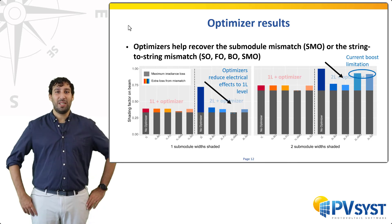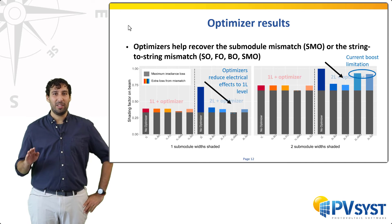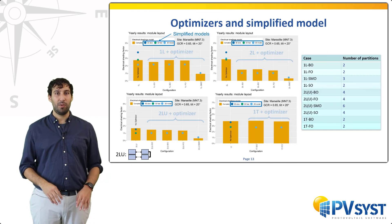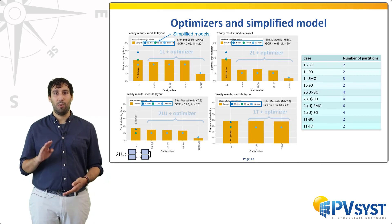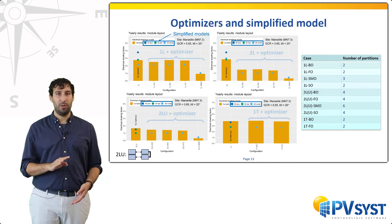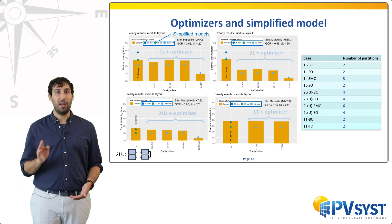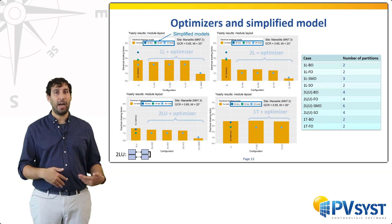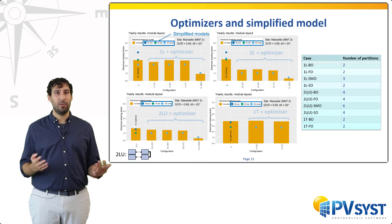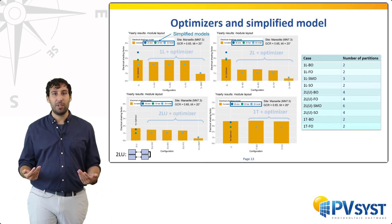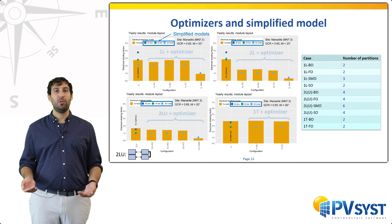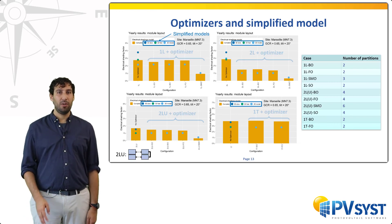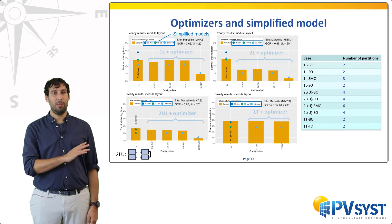Here we show that the simplified model can replicate most situations quite systematically. The four plots selected cover the most common cases: 1L, 2L, 2LU (meaning a string on two rows), and 1T. In the same situation as for the PVSEC results — GCR of 0.65, 20 degrees tilt — with an adapted choice of partitioning, one can replicate the detailed model quite well. The partitioning used to do so is summarized in the table on the right.